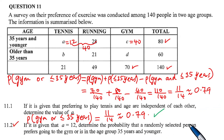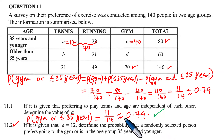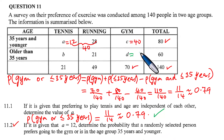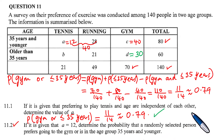We have successfully solved this problem: given A equals 12, the probability that a randomly selected person prefers going to the gym or is in the age group 35 years and younger is 11/14, approximately 0.79. We can also verify that since gym total is 70 and C is 40, then D equals 30 (40 plus 30 equals 70). Thank you for watching and have an awesome day!